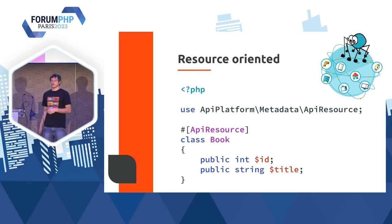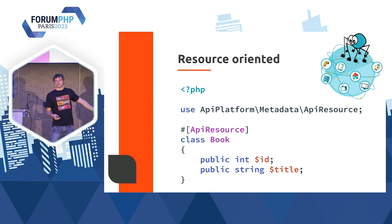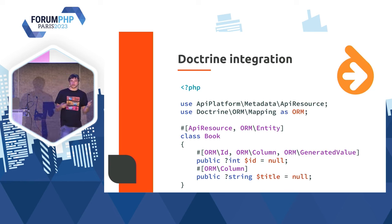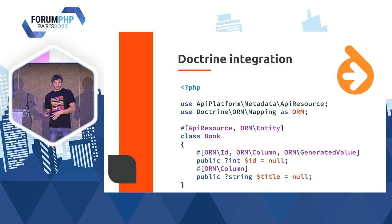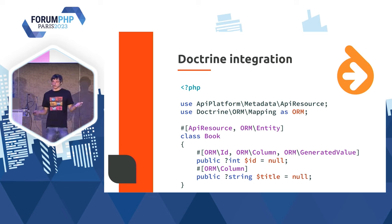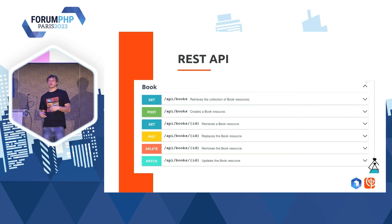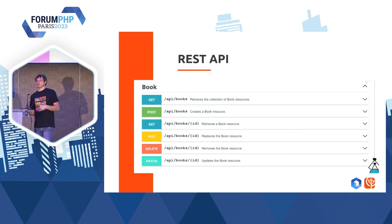Avec API Platform, quand vous commencez, l'idée c'est quelque chose comme ça : on a une classe PHP, ici un livre, et on va y apposer un attribut PHP 8, API Resource. On va même plus loin : avec API Platform, on propose une intégration de Doctrine. Donc si vous avez Doctrine, vous avez automatiquement un système de persistance qui est branché. Et avec l'attribut API Resource apposé sur une entité, vous avez tout qui marche d'emblée : une API REST avec des routes déclarées dans votre système qui permettent de récupérer une collection de livres, créer un nouveau livre, supprimer, mettre à jour, et ainsi de suite.